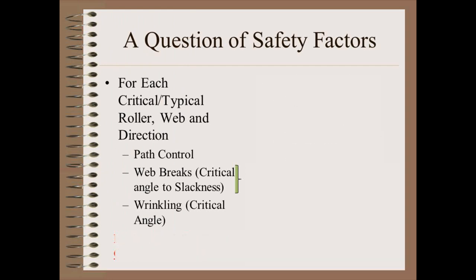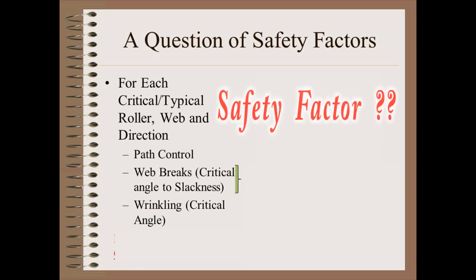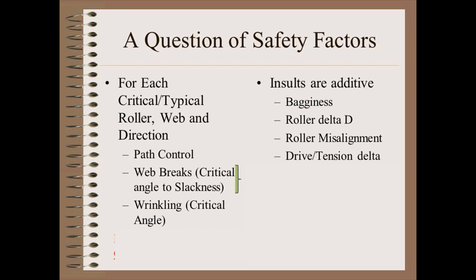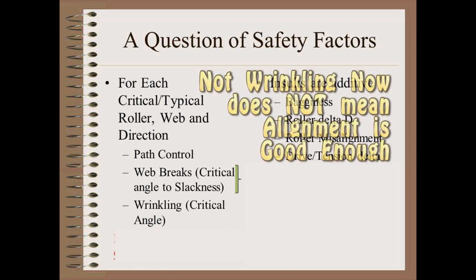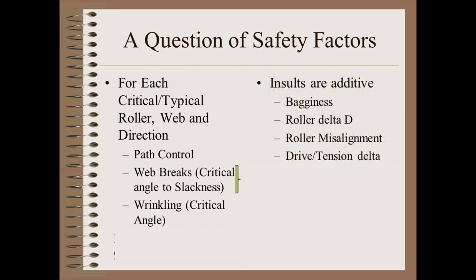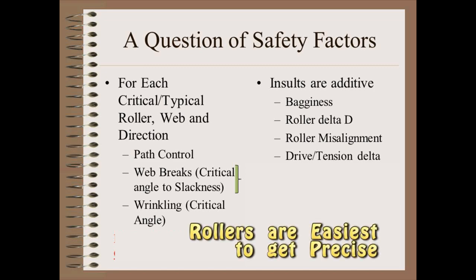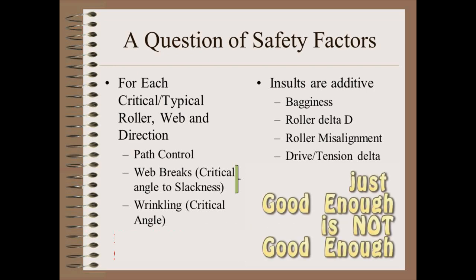We can find an allowable misalignment either by calculation or by trial. However, we need to consider one more vital variable: an appropriate safety factor. Other insults add directly and indirectly to the diagonal wrinkle, including roller problems such as diameter profile, drive problems such as poor tension control, and most of all, the real possibility of a baggy web. Just because you are not wrinkling at this moment does not mean your machine alignment is good enough. You might tolerate a bit of misalignment if the web is perfect, or a bit of bagginess if the rollers are perfect. However, you cannot tolerate an imperfect web running on an imperfect roller. Since rollers are easiest to correct, just good enough is not good enough — we want rollers to be more than good enough.